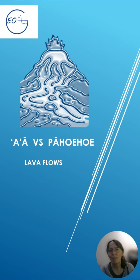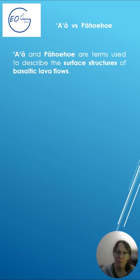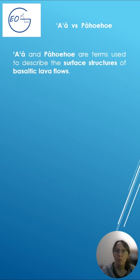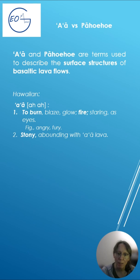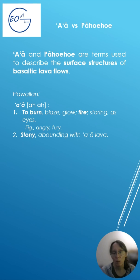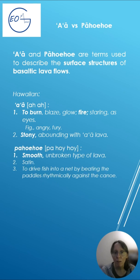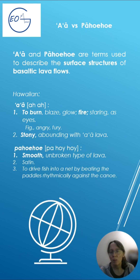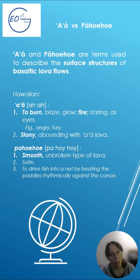Hello. How can you tell the difference between Aa and Pahoehoe lava flows? Aa and Pahoehoe are terms used to describe the surface structure of basaltic lava flows. The terms come from Hawaiian. Aa, among other meanings, refers to tubule, fire, and stony. Pahoehoe means smooth unbroken type of lava. The terms are not limited to describe Hawaiian lava but are used globally.